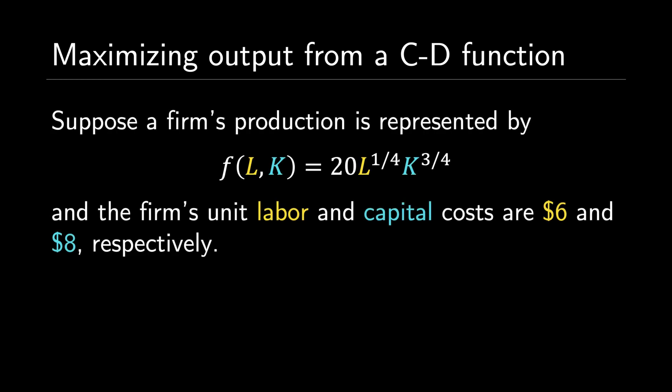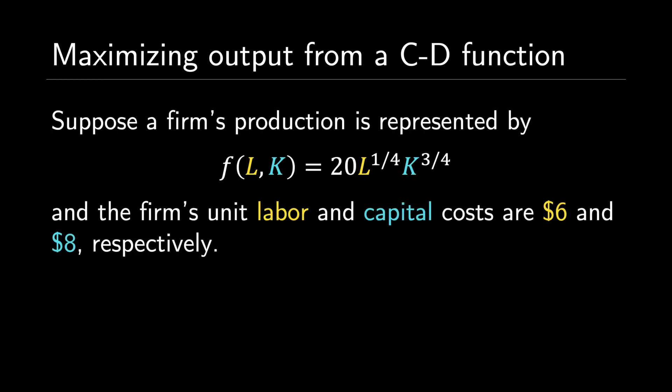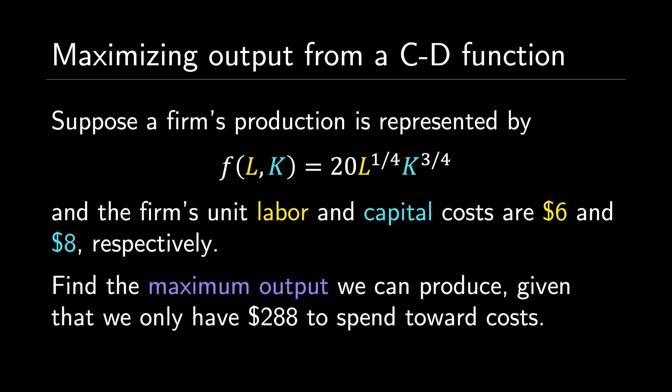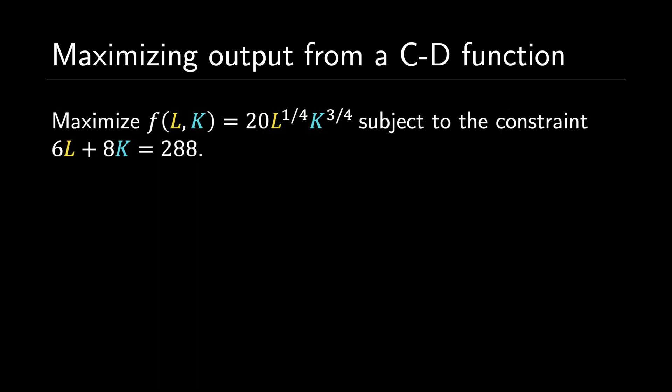Finally, we can combine the Cobb-Douglas production function with input cost information to maximize output. Suppose a firm's production is given by the Cobb-Douglas production function f of L comma K is equal to 20 times L to the one-fourth times K to the three-fourths, and the firm's unit labor and capital costs are six dollars and eight dollars respectively. We want to maximize output given that we only have $288 to spend on total input costs. We can rewrite this as: maximize f of L comma K equals 20 times L to the one-fourth times K to the three-fourths, subject to the constraint 6L plus 8K equals 288.